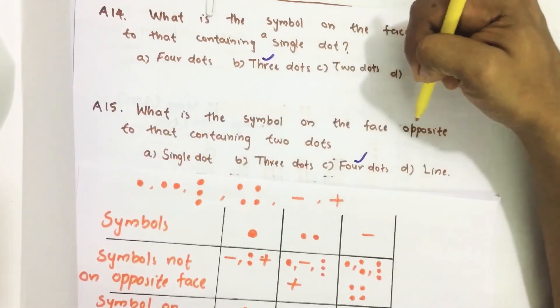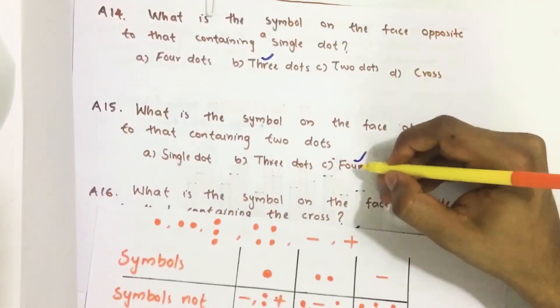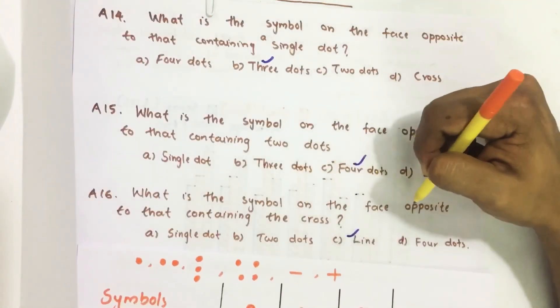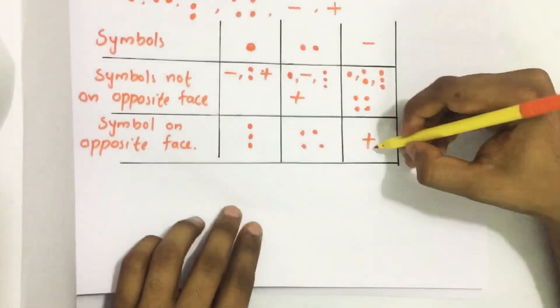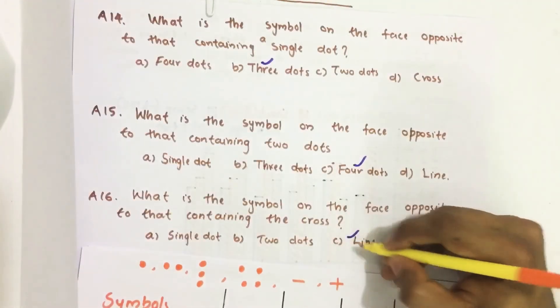What is the symbol on the face opposite to that containing two dot? It is four dot. So our option is C. Then third question. What is the symbol on the face opposite to that containing a cross? It is line. So our answer is option C line.